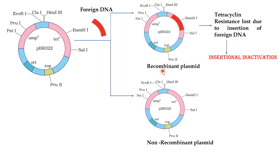The non-recombinant plasmid, on the other hand, fails to incorporate the foreign DNA at the restriction site. Therefore, the non-recombinant plasmid retains tetracycline resistance.